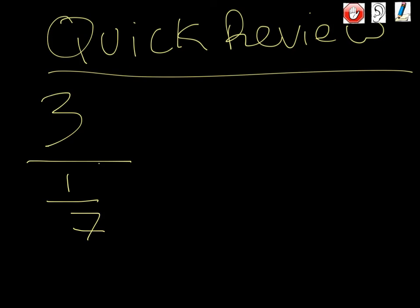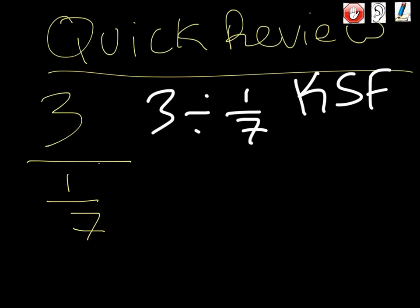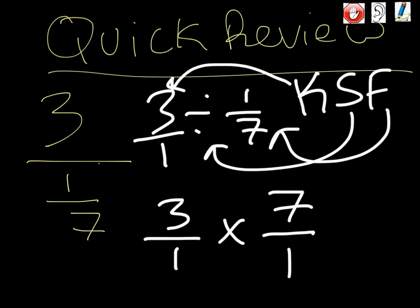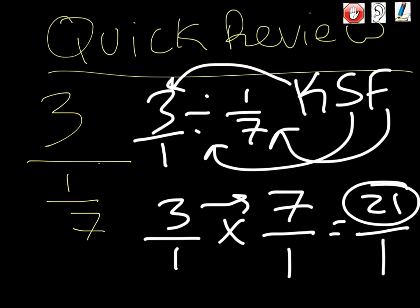We need a quick review of dividing with fractions. Here we have 3 divided by 1/7. Remember the idea of keep, switch, flip when dividing by fractions. First, turn everything into fractions: 3 becomes 3 over 1. Then keep the 3 over 1, switch division to multiplication, and flip 1/7 to 7 over 1 — that's the reciprocal. Now multiply straight across: 3 times 7 equals 21 over 1, or just 21. Make sure everything is in fraction form, then keep, switch, flip, and multiply.